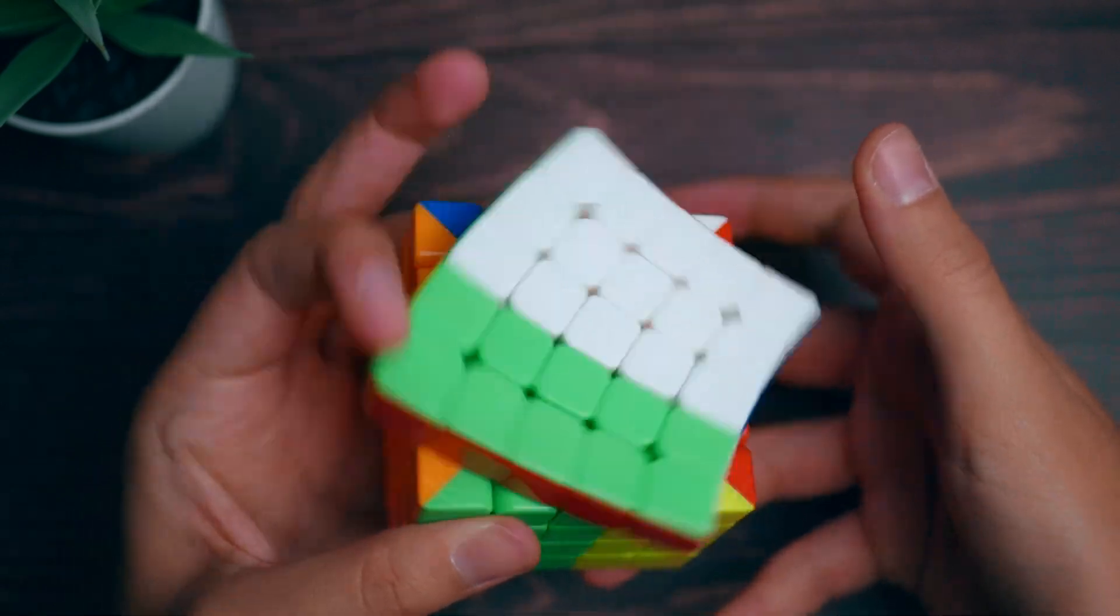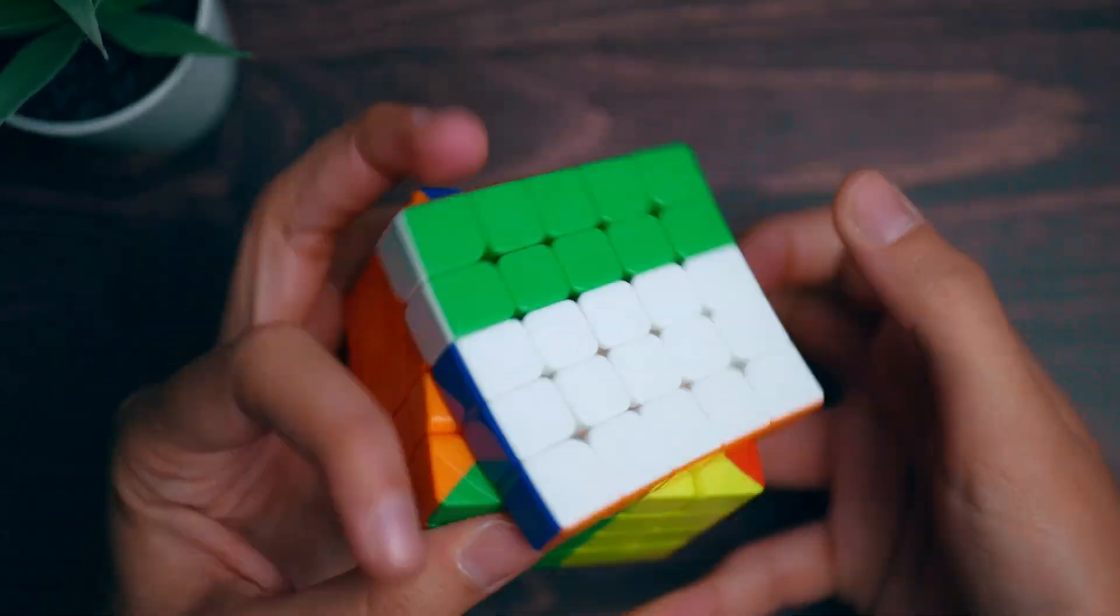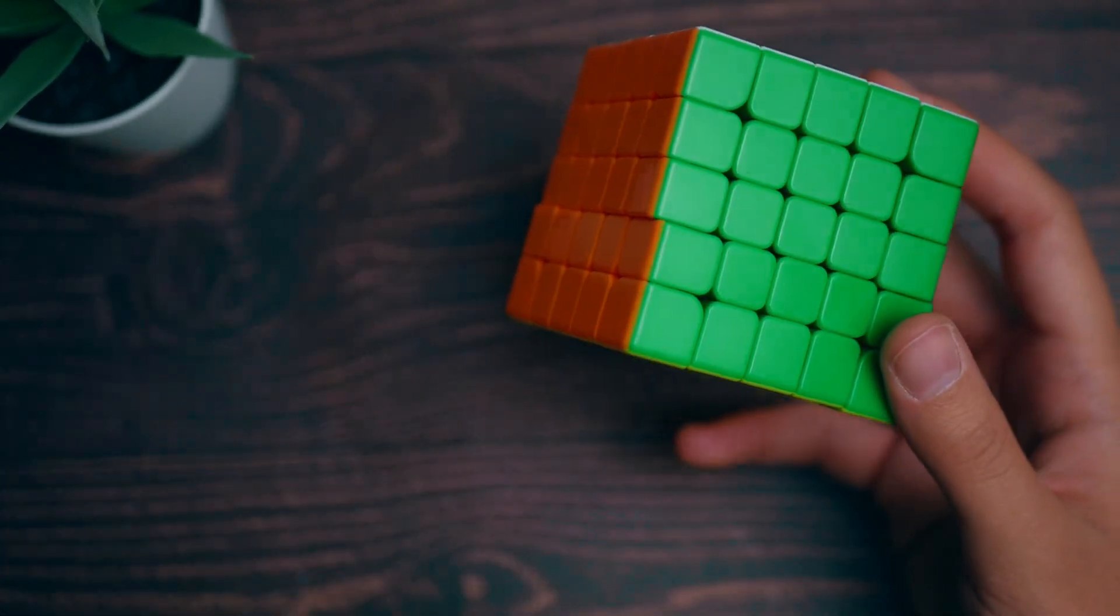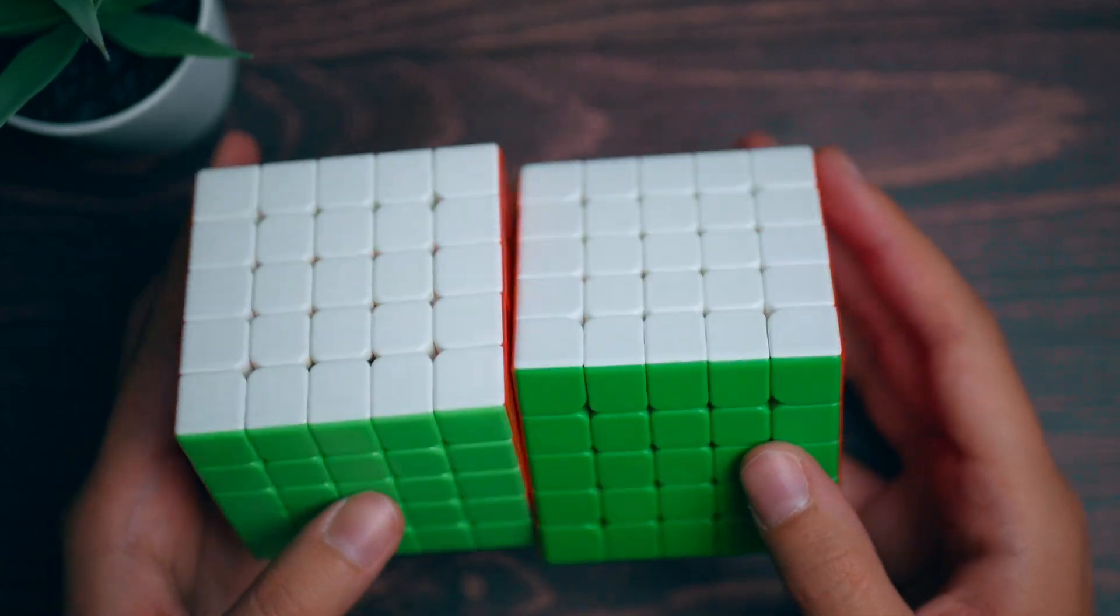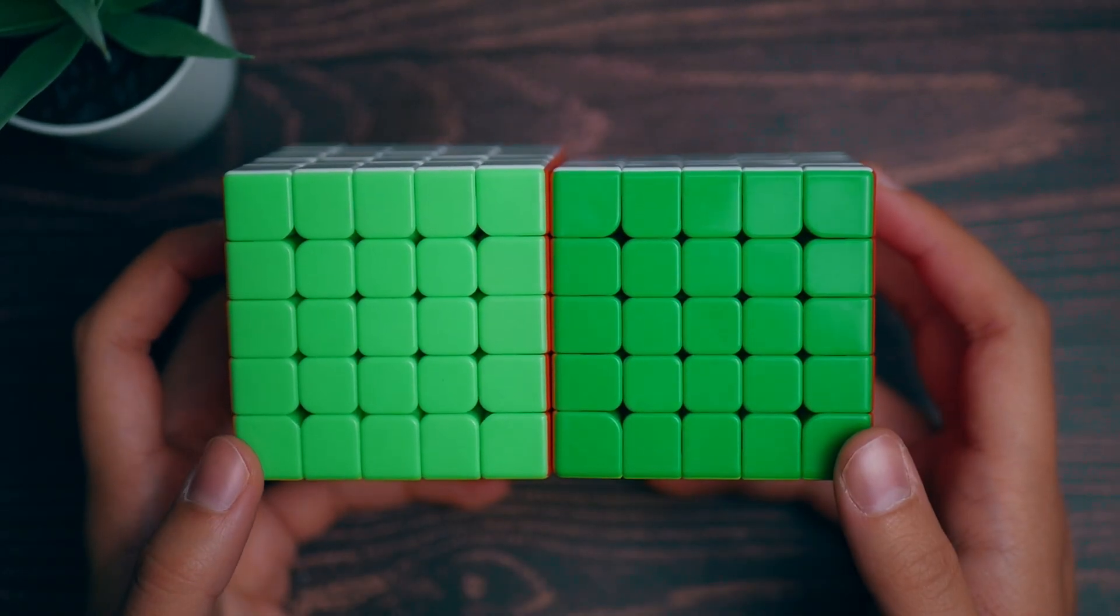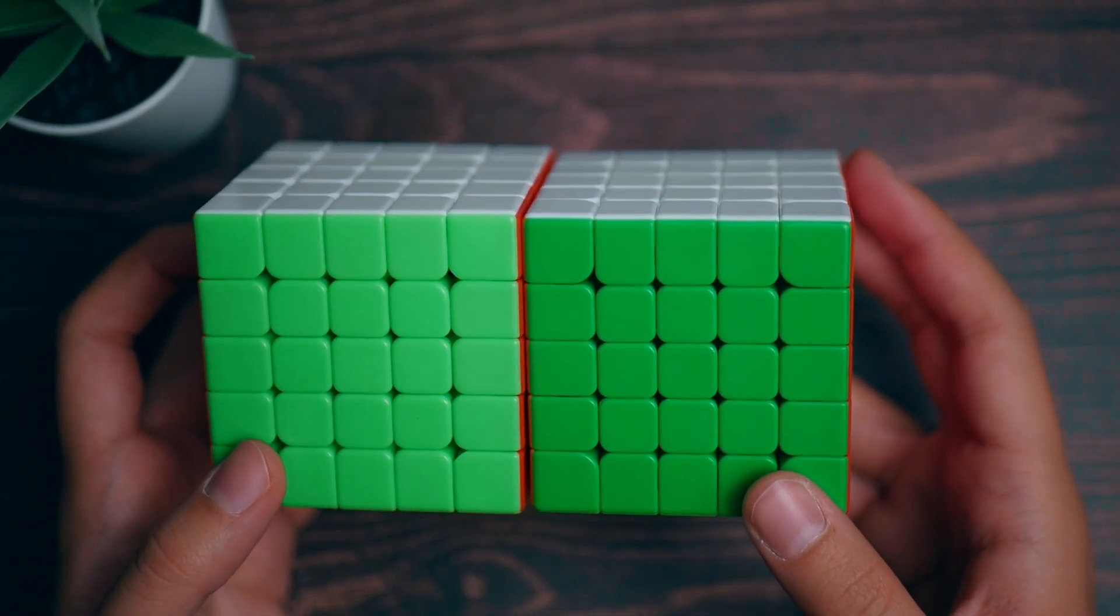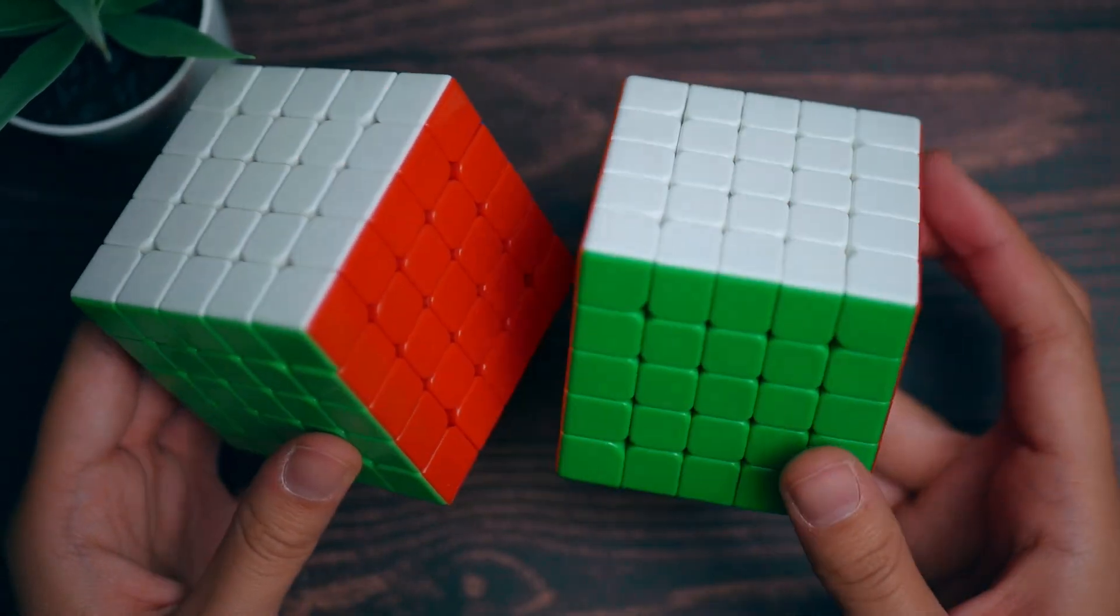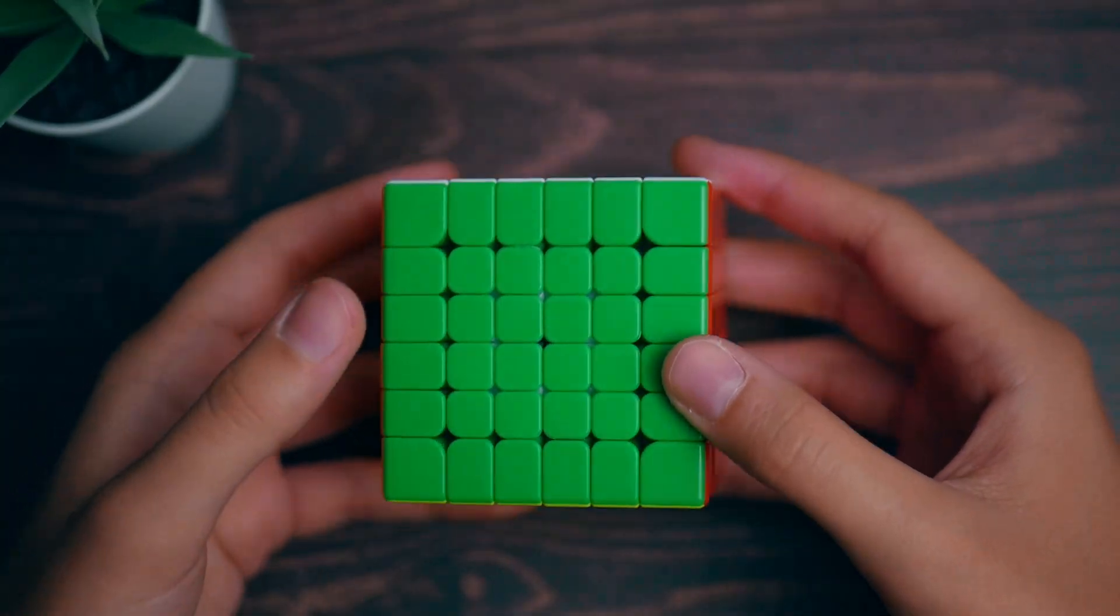For 5x5, I'm going to main the Celeritas MGC, and then my backup main will be the Aosu WRM. Honestly, I might use this one as my main. I'm not sure. But for my goals, probably just PR average. I think I have like a 124. I don't care too much about 5x5 either, to be honest.